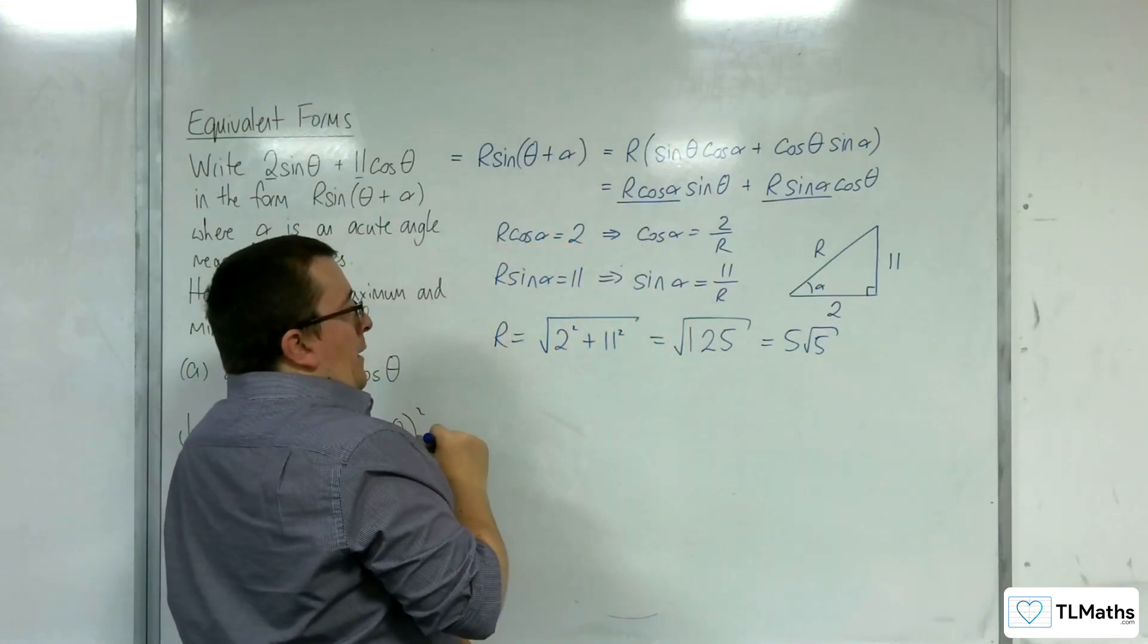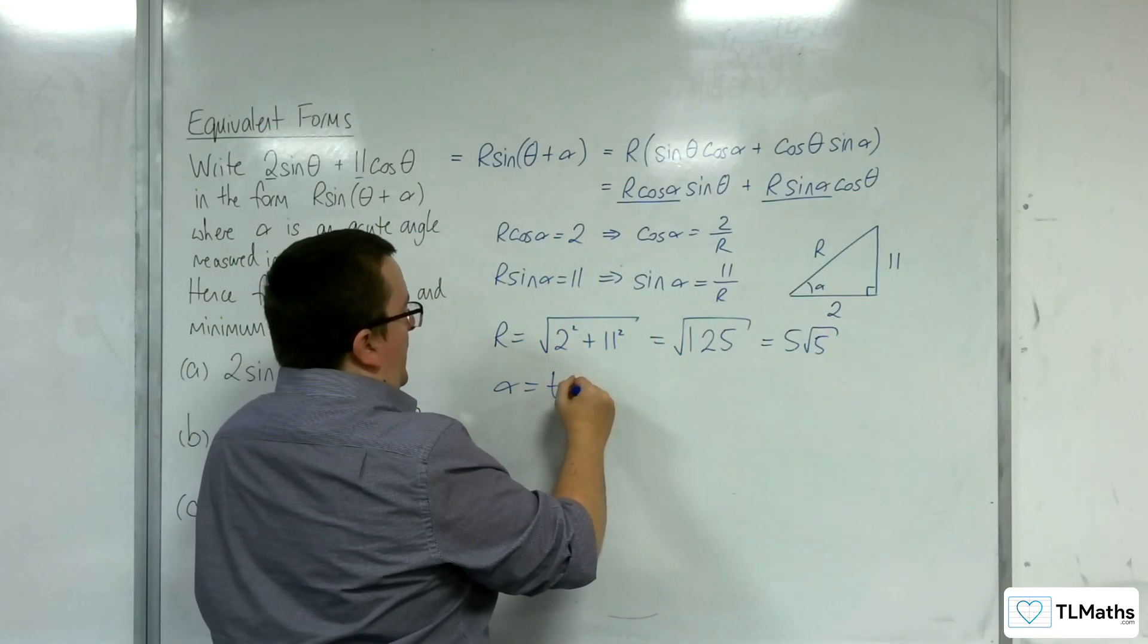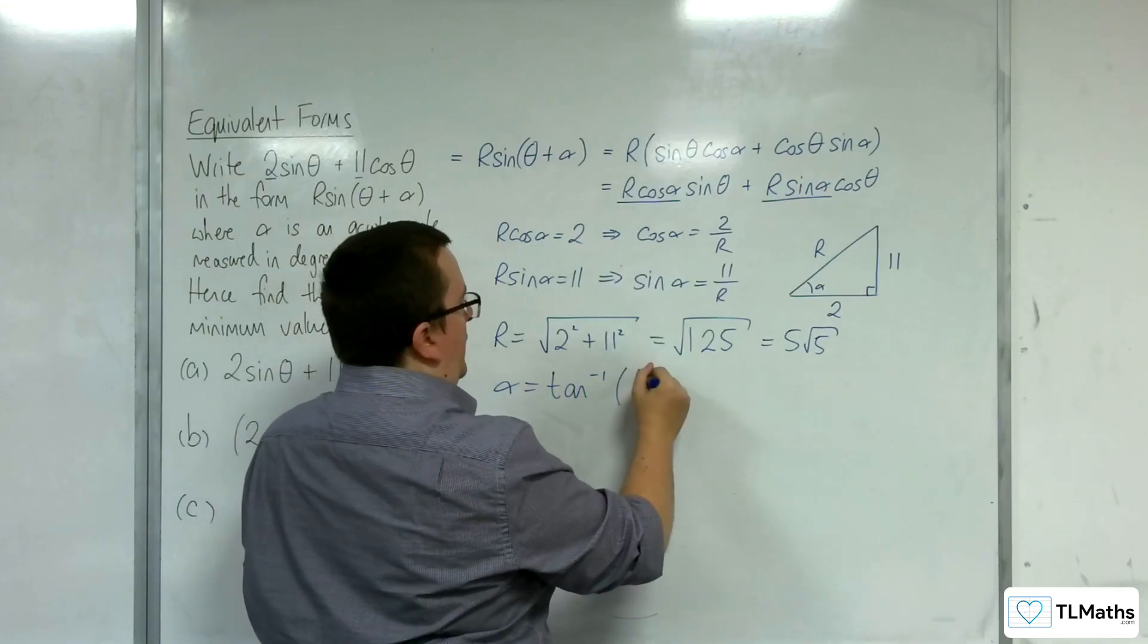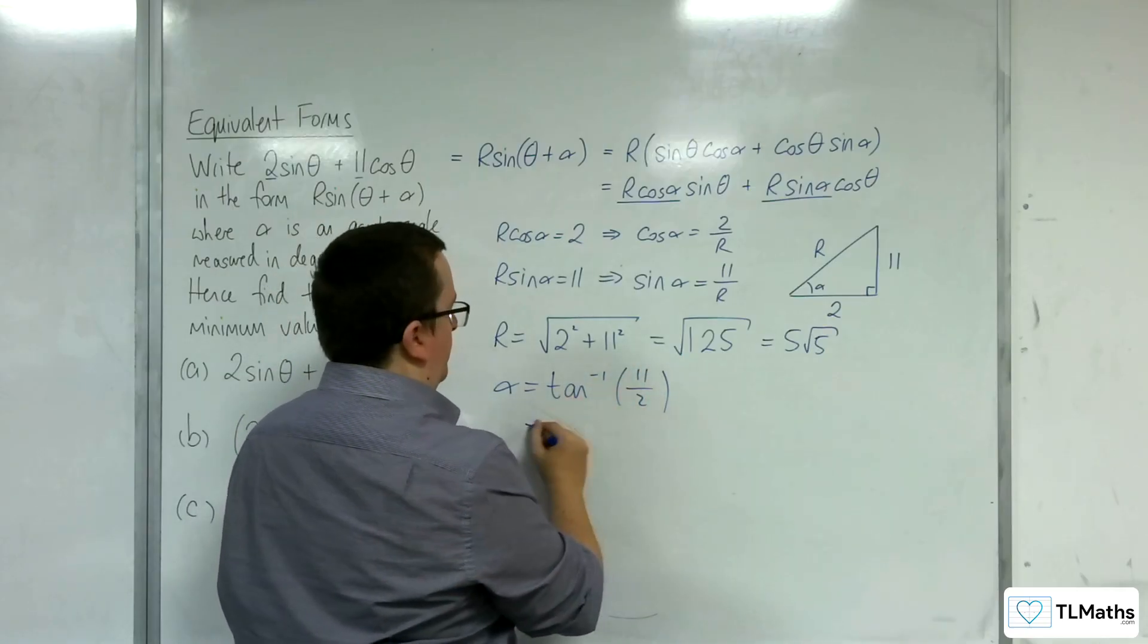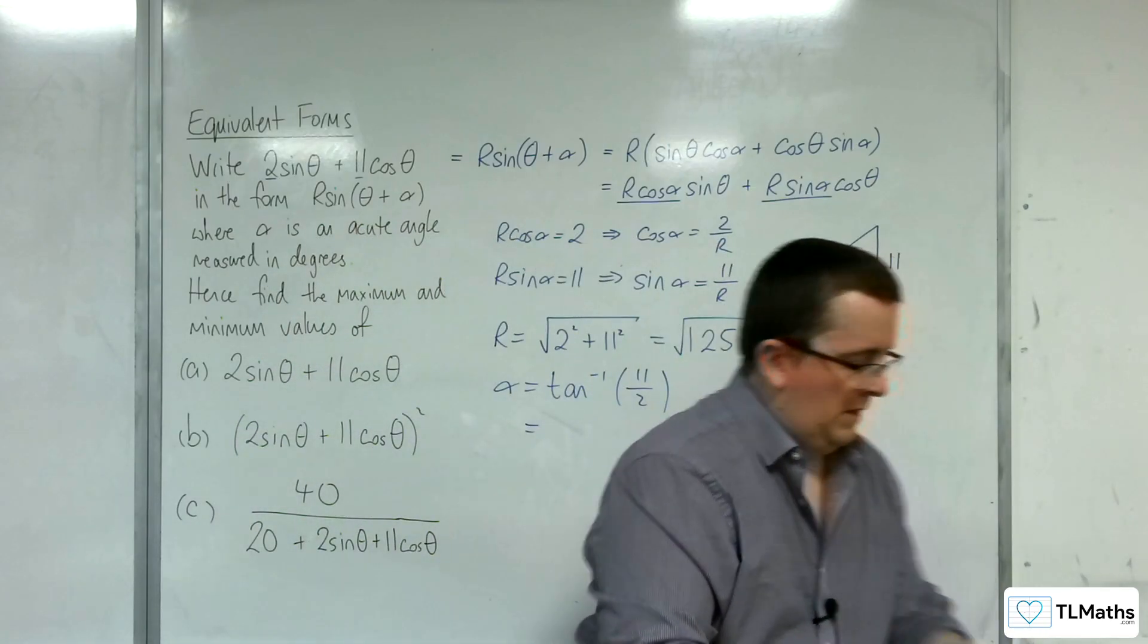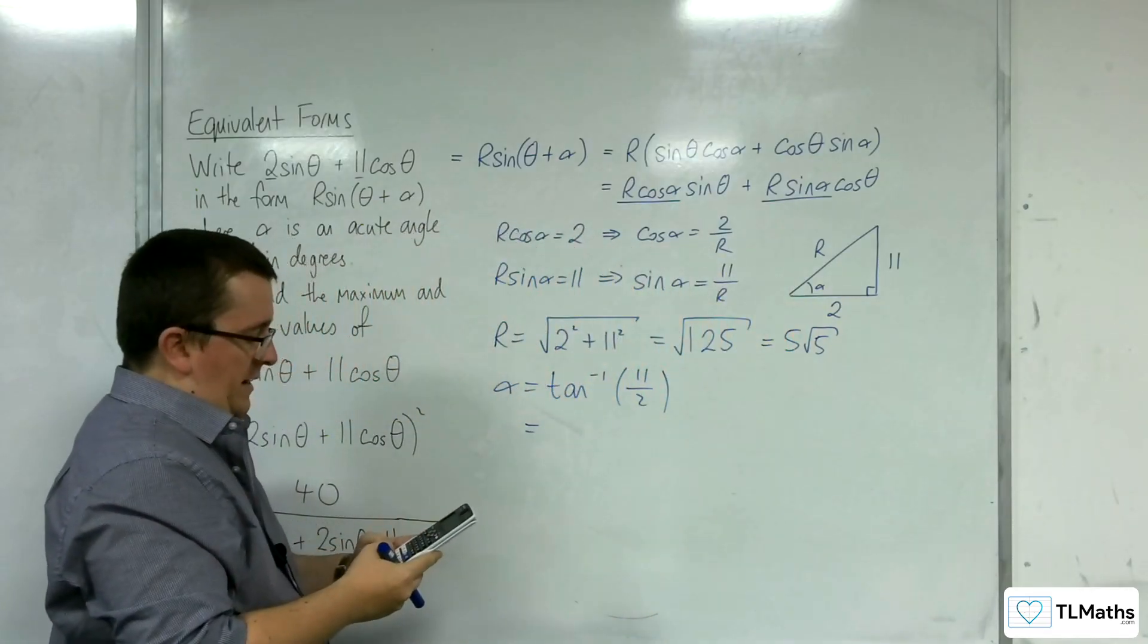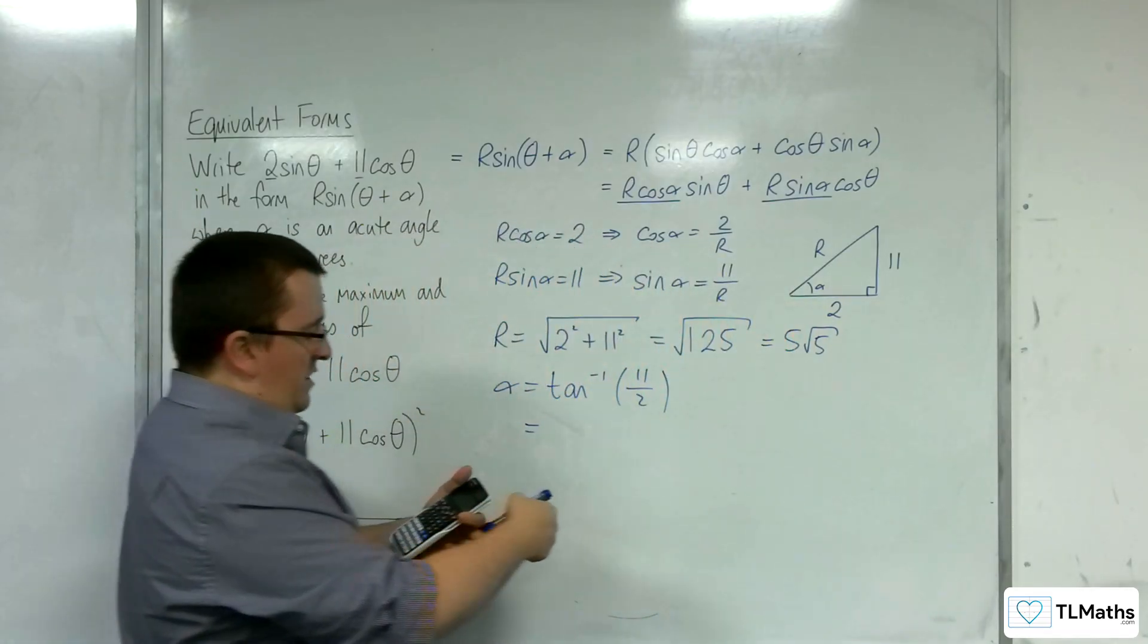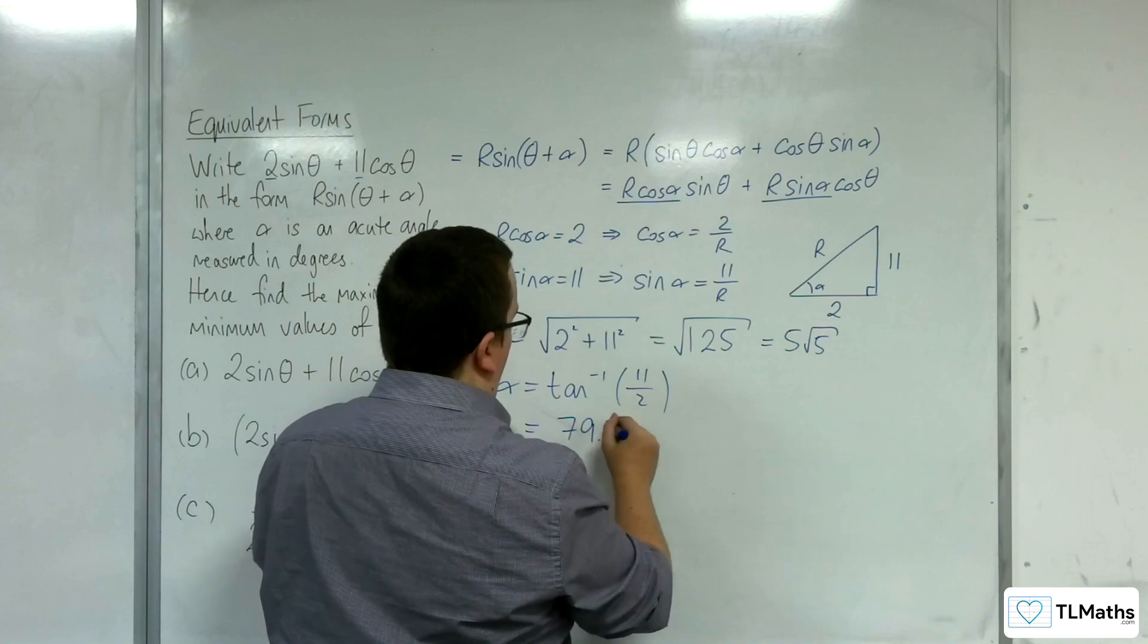And also we can work out alpha. That will be the inverse tan of 11 over 2. So make sure our calculator is in degrees.